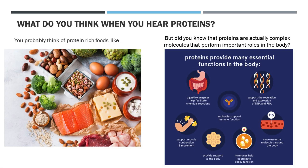What do you think of when you hear the word proteins? You probably think of food associated with having lots of protein such as meat, nuts, and eggs. While these foods do contain lots of protein for our diet, in biochemistry, proteins are actually microscopic complex molecules that perform various functions in our bodies and in the world around us. Proteins can be involved in transporting essential molecules around the body, act as antibodies in our immune systems, and help our muscles move, just to name a few functions.